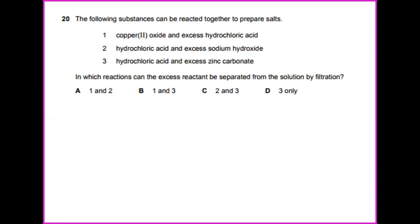The following substances can be reacted together to prepare salt. Among the three, which do you think the reactions of two products or items in terms of preparing the salt produce the salt? In this case, when the combination of hydrochloric acid with the excess of zinc carbonate, it will produce the end product which is a salt. In which reaction can be separated from the solution by filtration? We know that it's a salt and it can be separated by using the method of filtration. So the answer is the reaction between hydrochloric acid and excess zinc carbonate. So the answer would be number 3.